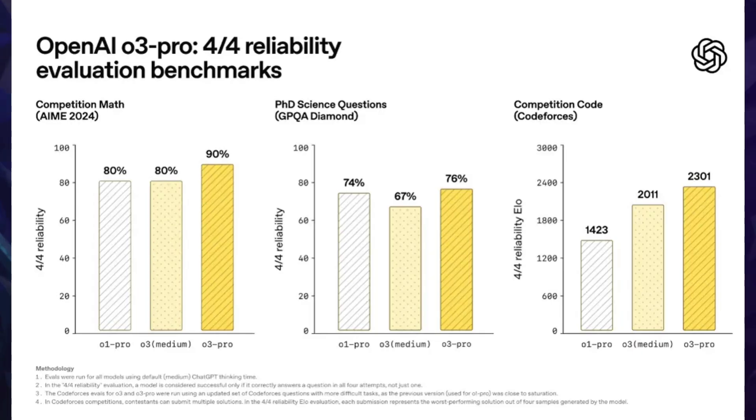It excels in tasks where consistent accuracy matters — not just getting the right answer once, but getting it right over and over every time it's asked. That's a level of consistency measured using what's called a 4 out of 4 reliability test, where a tool is given a problem four times and has to get the right answer every time.